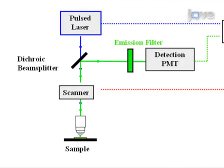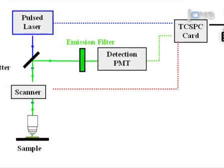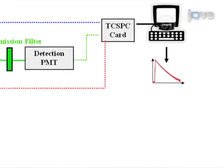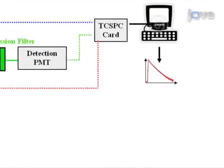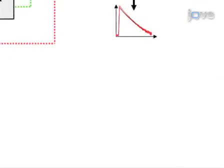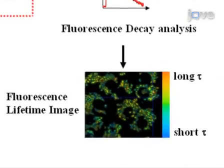As a second step, time-domain FLIM is performed using a confocal laser scanning microscope. Next, the data is fitted to an exponential decay to yield a fluorescence lifetime for each pixel. A FLIM map accompanied by a fluorescence lifetime histogram plot can then be generated.